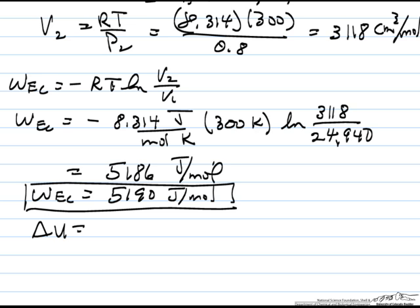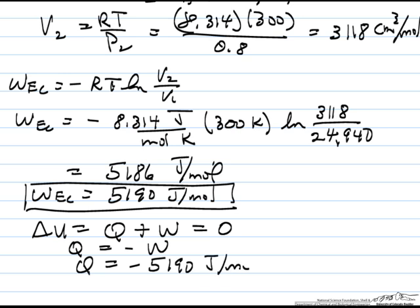Back to the first law. It's isothermal, delta U is 0, so Q is minus W, and therefore Q is minus 5190 joules per mole.